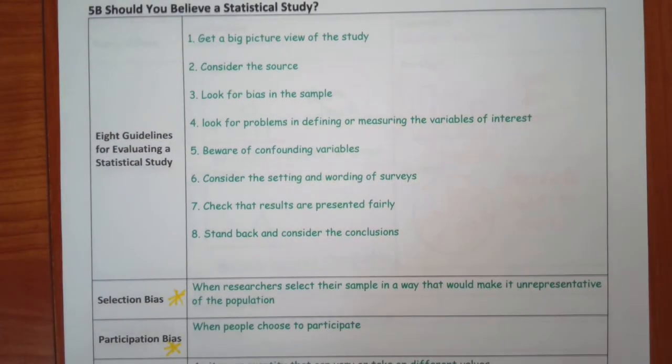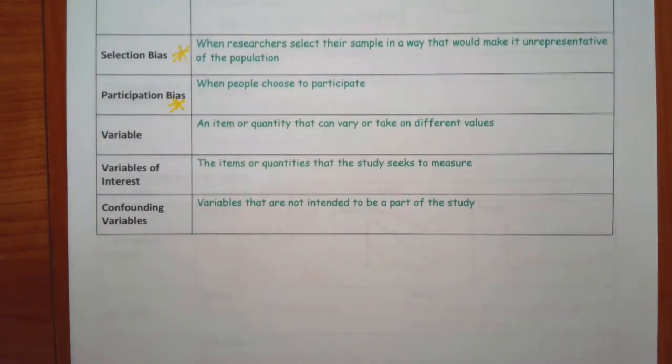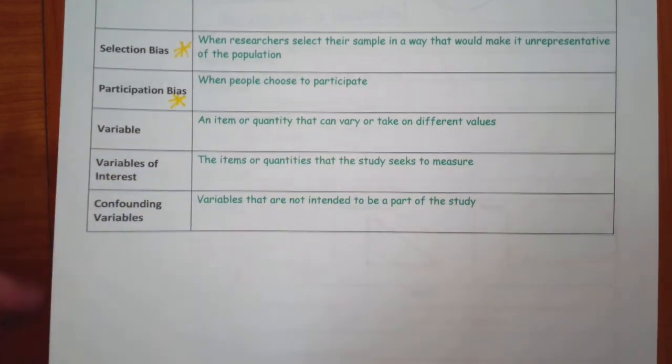Then we talked about one of the things in here is it says, look for problems in defining or measuring the variables of interest. A variable can be any item or quantity that can vary or take on different values. Variables of interest are the variables that they seek to measure. Confounding variables are variables that are not intended to be part of the study, but they can have an impact on the results. So make sure that you're looking at your, you can have multiple variables in any situation, but the variable of interest is what you're really talking about. And confounding variables can be involved in it, but are not intended to.